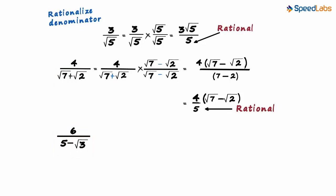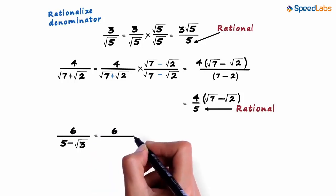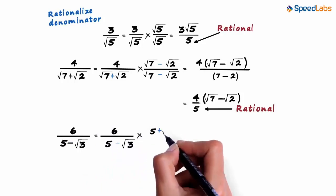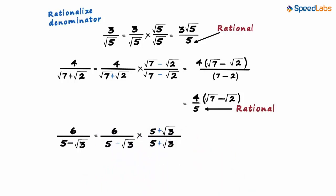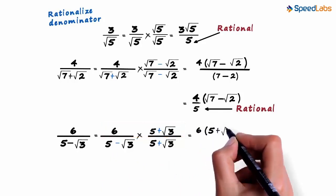What do we do now? Do we just change the sign in between, just like we did in the previous example? Yes. We can write this as 6 divided by (5 minus √3), multiplied by (5 plus √3) divided by (5 plus √3). The numerator will equal the product of these two terms: 6 multiplied by (5 plus √3).